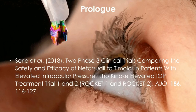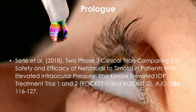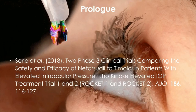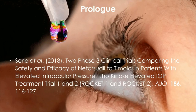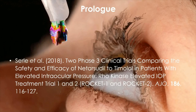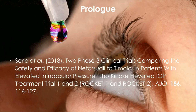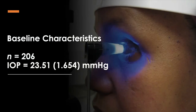In their study, they recruited patients diagnosed with ocular hypertension or open-angle glaucoma and measured the unmedicated baseline intraocular pressure before assigning them to treatment groups. They measured patients' intraocular pressures with Goldmann tonometry, then split them into three treatment groups. The baseline sample statistics for one group: n=206, mean intraocular pressure = 23.51 mmHg, standard deviation = 1.654 mmHg.